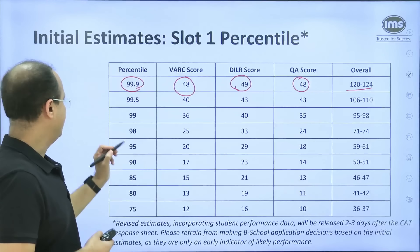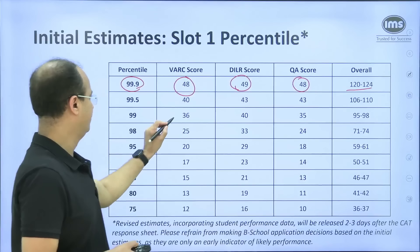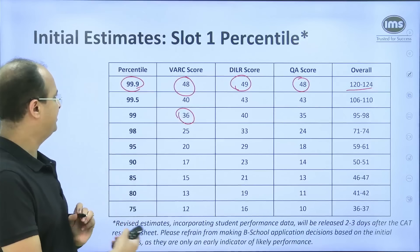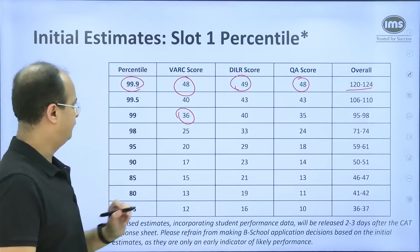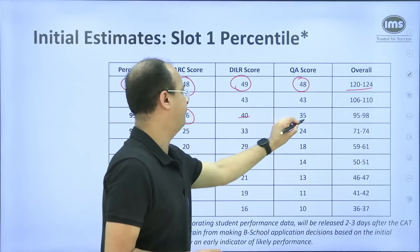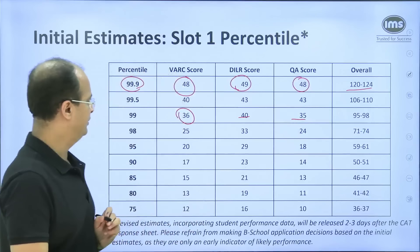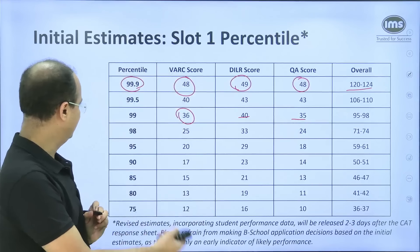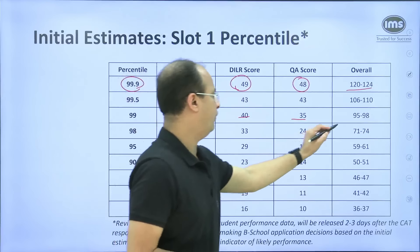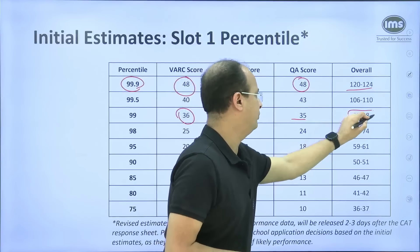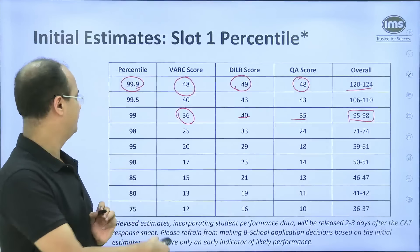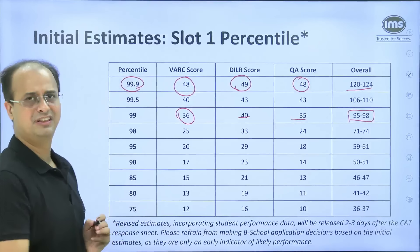When it comes to the 99 percentile mark, we feel a score of 36 in VARC, 40 in DILR and 35 in QA is going to get you there. An overall score of 95 to 98 is going to be required to reach that 99 percentile mark.